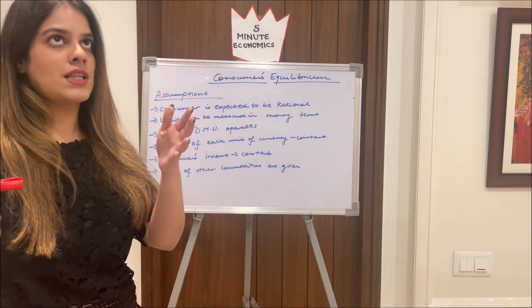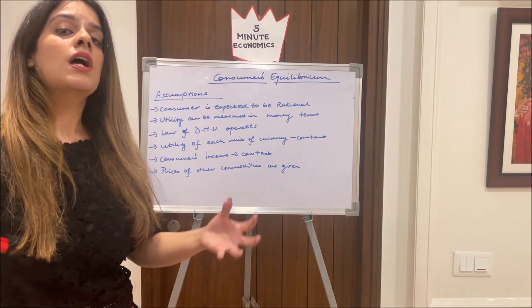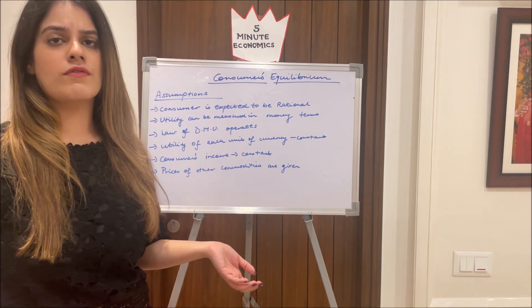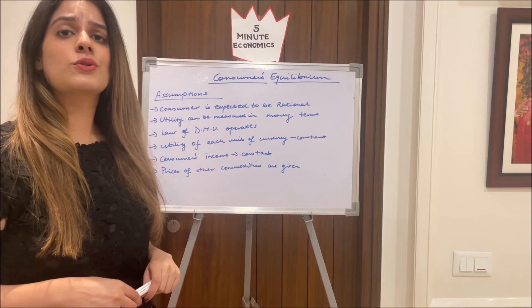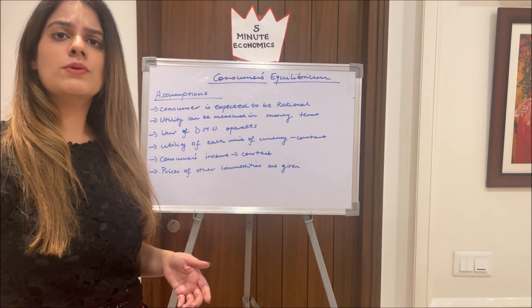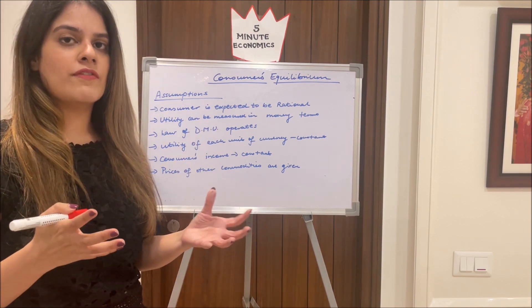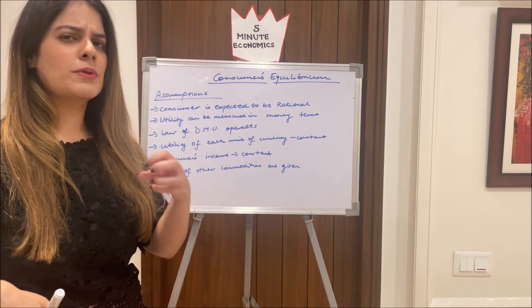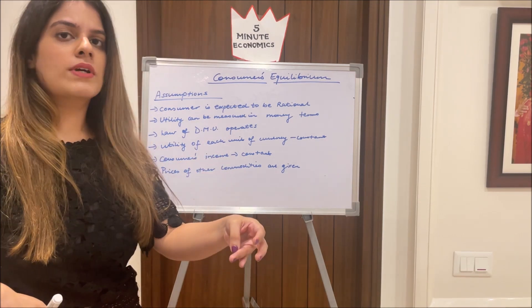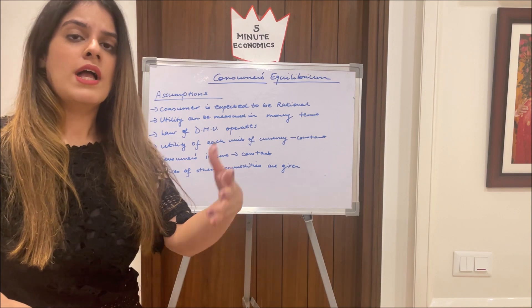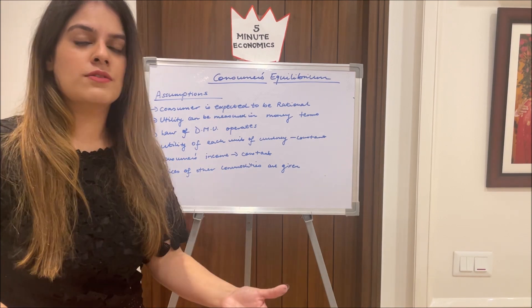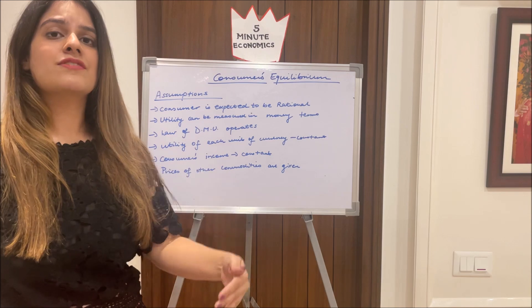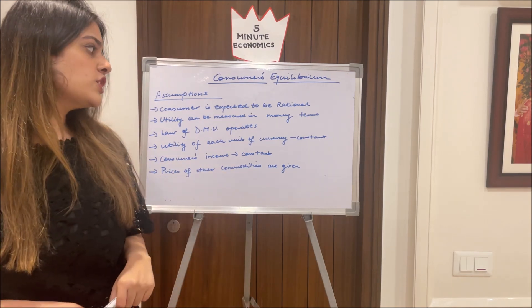Utility being measurable in money allows us to say seven fifty is worth it. Third, the law of diminishing marginal utility operates: as we consume more of a commodity, the utility from each successive unit falls. Like the first glass of water when you're very thirsty gives immense satisfaction, the second gives less, the third even less, and the fourth might feel too much.